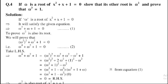This is the perfect square formula: (omega²)² + 2omega² + 1 = (omega² + 1)². So the expression becomes (omega² + 1)² − omega². Applying the difference of squares formula, a² − b² = (a − b)(a + b), this gives (omega² + 1 − omega)(omega² + 1 + omega).